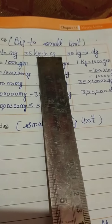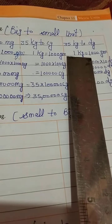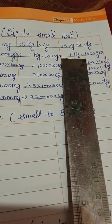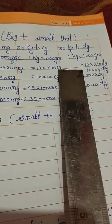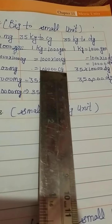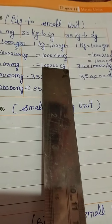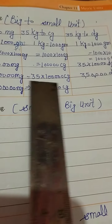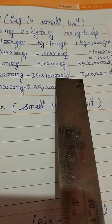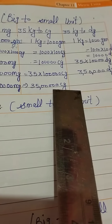Next question is going from big to small unit: 35 kilogram to cg. cg means centigram. Now 1 kilogram is equal to 1,000 grams, and 1 gram is equal to 100 centigrams. So 1,000 multiplied by 100 cg gives 1 and five zeros — that is 1 lakh cg. Therefore 35 multiplied by 1 lakh is equal to 35 lakh centigrams.